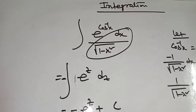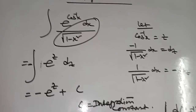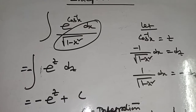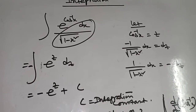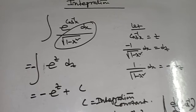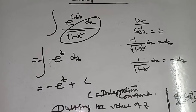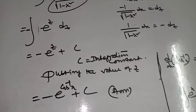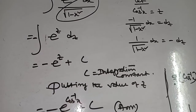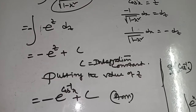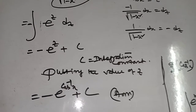To summarize: integration of e to the power cos inverse x by root over 1 minus x square — first, let cos inverse x equal to z. Differentiation of cos inverse x means minus 1 by root over 1 minus x square dx equals dz. So 1 by root over 1 minus x square dx equals minus dz. Now put the value.